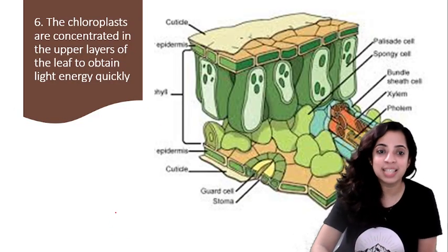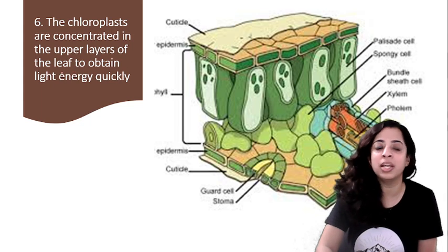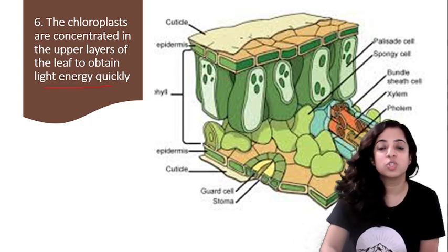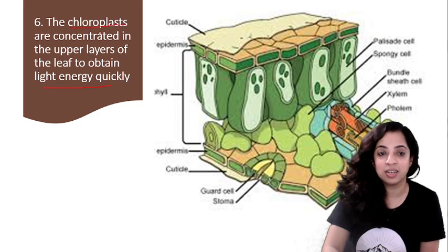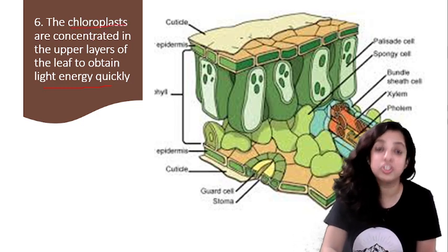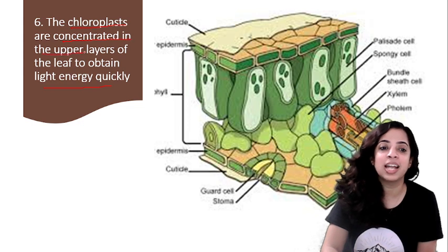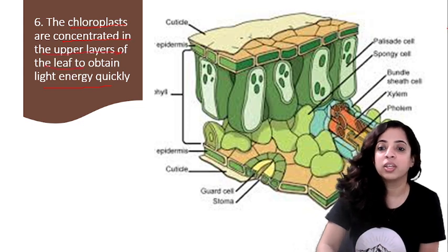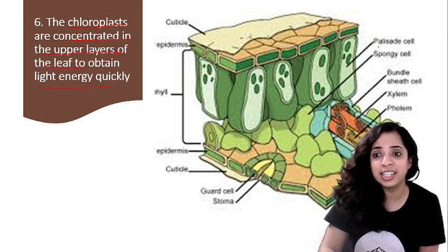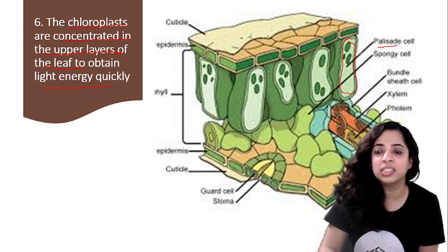The next point is chloroplasts are concentrated in the upper layers of the leaf to obtain light energy very quickly. So the chloroplasts - those cells in the leaf which contain the chloroplasts - are mainly present at the upper layers of the leaf. We have already studied this in detail, the palisade tissues. Can you see here these ones?